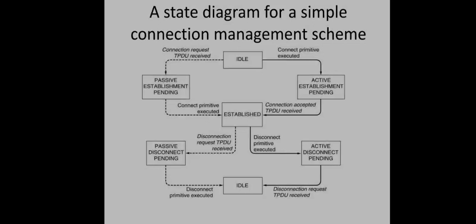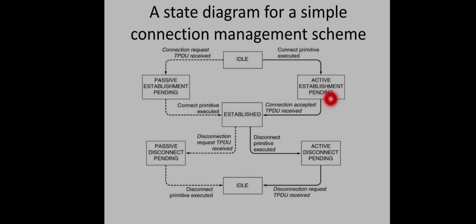Now let us look at the state diagram of a simple connection management scheme. The state diagram shows how the connection state changes when different primitives are executed. The dotted line part indicates the server side; the other part indicates the client side. Initially, both client and server are in the idle state. When the client executes the connect primitive, a connection request is sent, and the state changes to active establishment pending. Upon receiving the connection accepted TPDU from the server, the state changes to established.